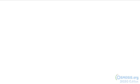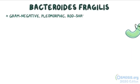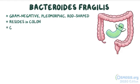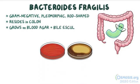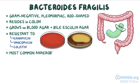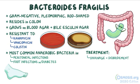As a quick recap, Bacteroides fragilis is a gram-negative, pleomorphic, rod-shaped bacterium that resides in the colon of humans. It grows on blood agar and bile esculin agar, and it's resistant to kanamycin, vancomycin, and colistin. It's the most common anaerobic bacteria found in peritoneal infections and foot infections in patients with diabetes mellitus. Treatment consists of drainage of abscesses and debridement of necrotic tissue, and antibiotics like metronidazole.